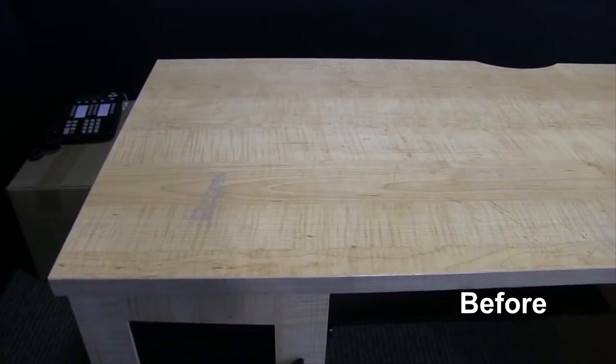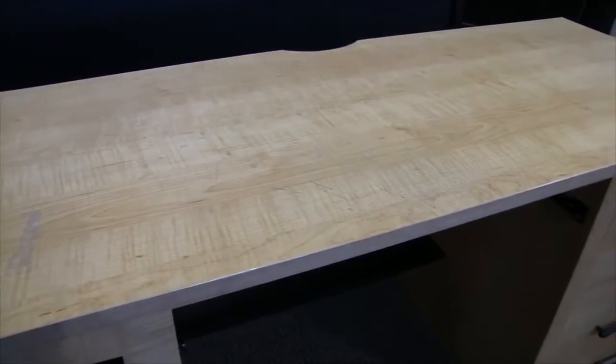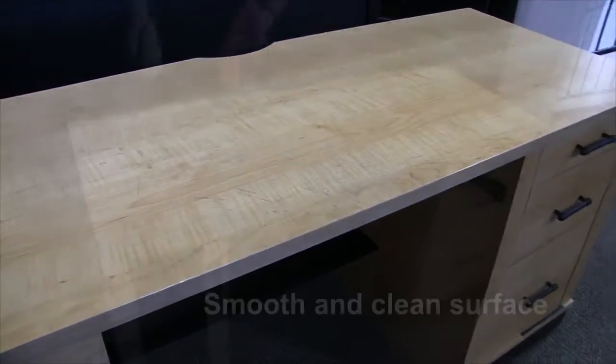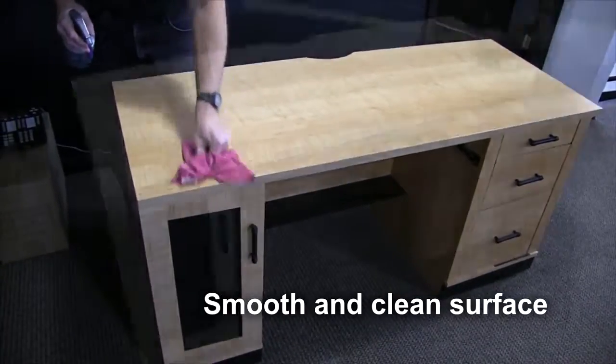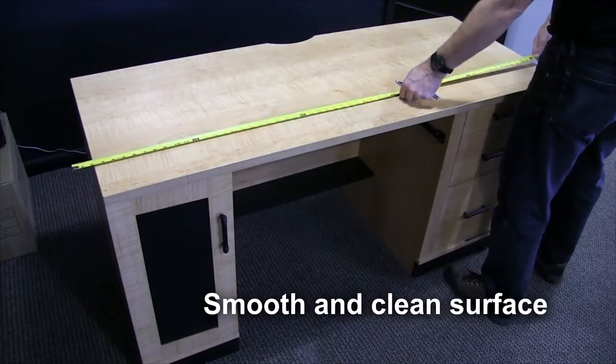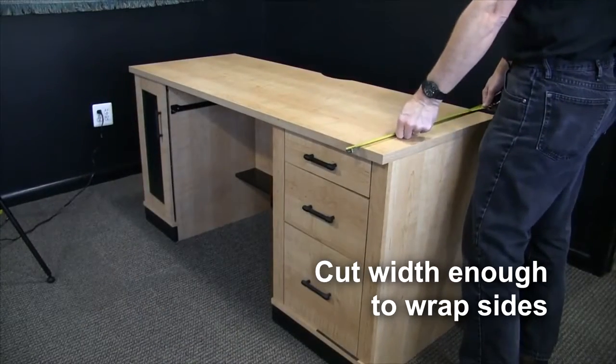Today we're going to discuss the installation best practices when applying Bellevian architectural finishes to a tabletop. The first and most important step to any Bellevian installation is to make sure you're working with a smooth, non-porous surface. A rough surface should be sanded completely and then cleaned with isopropyl alcohol.